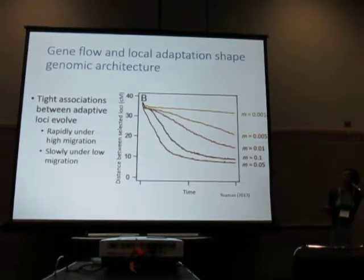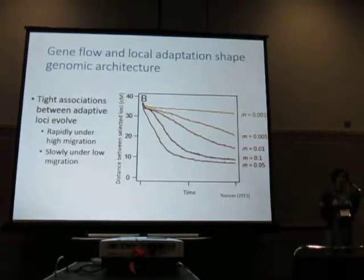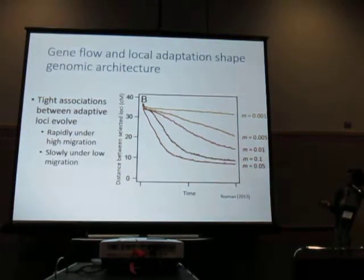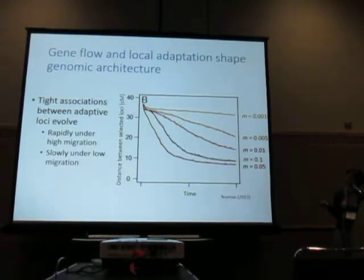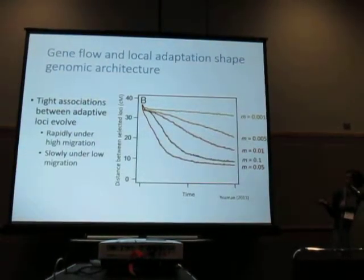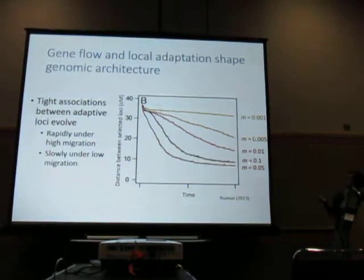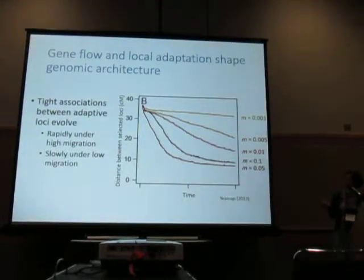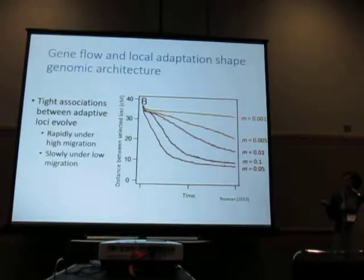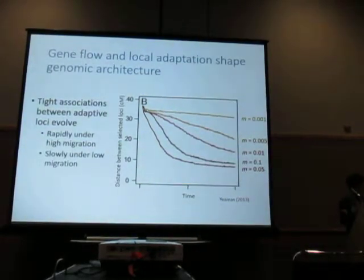Conversely, gene flow and local adaptation can also themselves shape genomic architecture. What I'm showing here on the right is a simulation study simulating the distance between selected loci over time under varying intensities of migration. These tight associations between adaptive loci evolve rapidly under high migration, but more slowly under low migration.